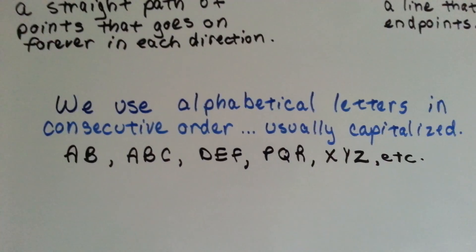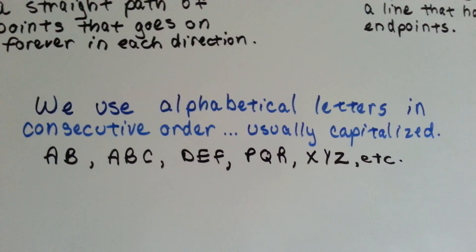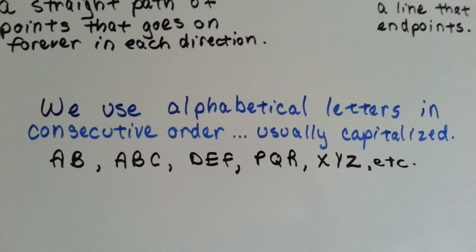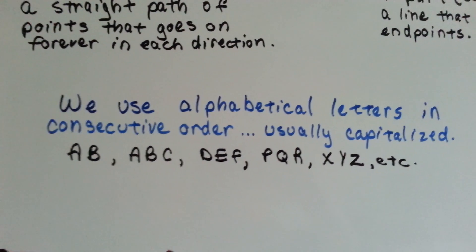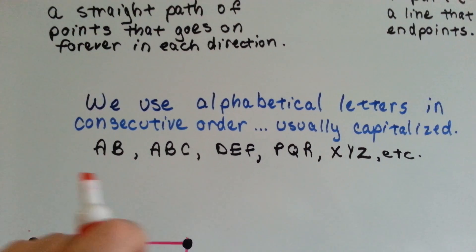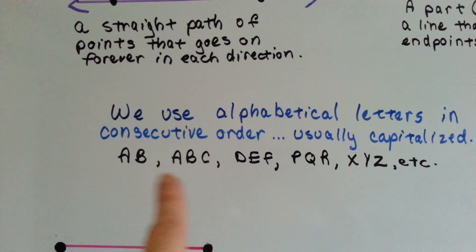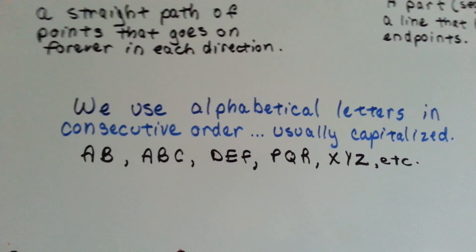We use alphabetical letters in consecutive order, capitalized, like A, B, A, B, C, D, E, F, P, Q, R, X, Y, Z, in order to label them. We could do it backwards, B, A, C, B, A, as long as they are still in order, whether they are forward or backwards, as long as they are in order.